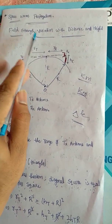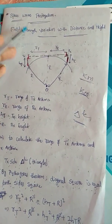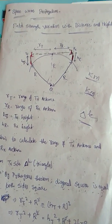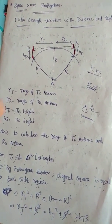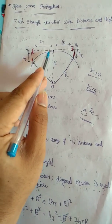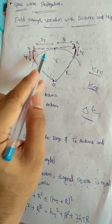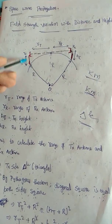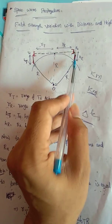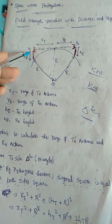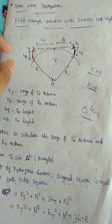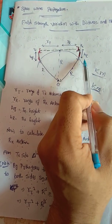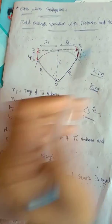One of the important topics we are going to discuss is field strength variations with distance and height with respect to space wave propagation. In this figure, we have the Earth's surface with a transmitter antenna and a receiver antenna, each at some respective antenna height.